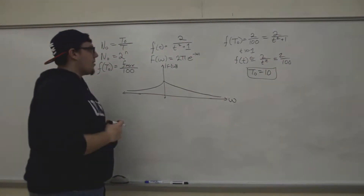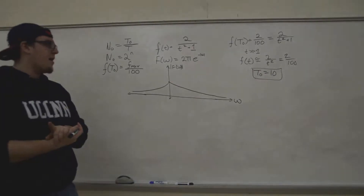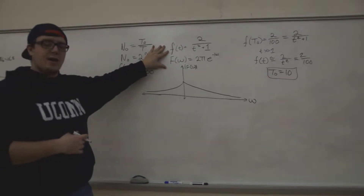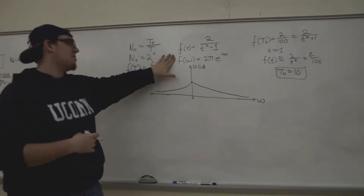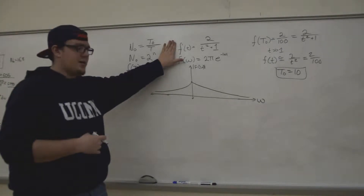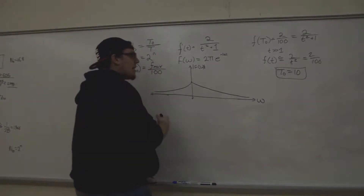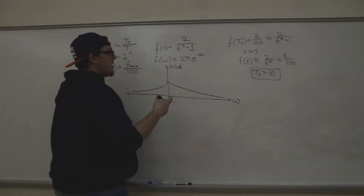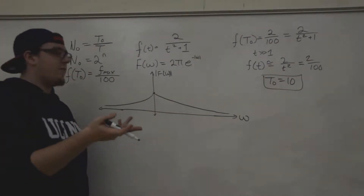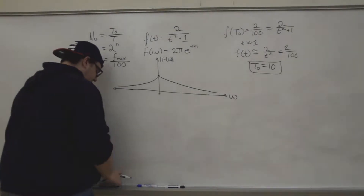The first method uses the 99% criterion on the frequency response. We find the point where the continuous-time Fourier transform of our function — which you can look up using a duality property — reaches 99% of its maximum value. The maximum value of F(ω) is 2π at ω equals 0. The Fourier transform is 2π e to the negative absolute value of ω, as you can see from the graph.